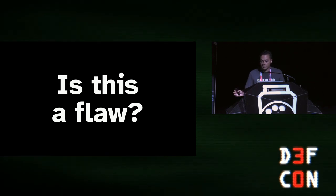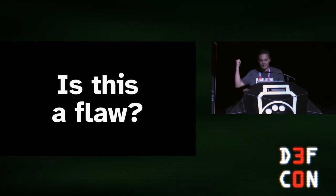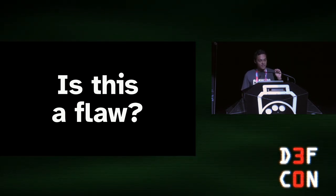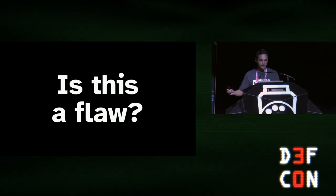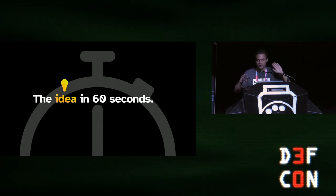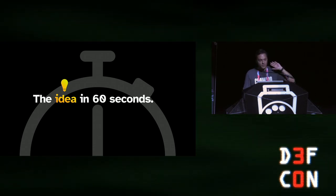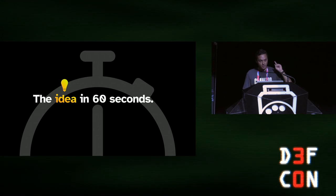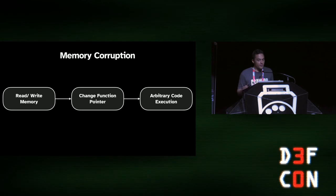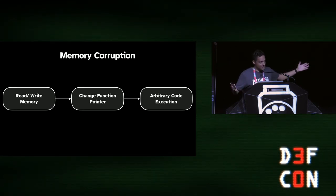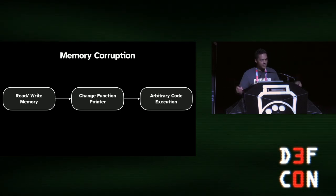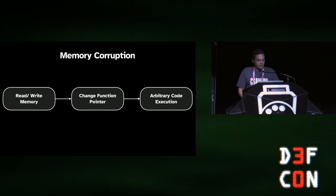By the end of today's talk, I'd like you to come up with an answer to this question: is this a flaw, or is PAC-MAN a consequence of multiple things coming together? Instead of boring you with all the details, I'm going to give you the entire idea in 60 seconds. A lot of memory corruption attacks follow the same pattern: you get the ability to read and write memory you shouldn't, you change a function pointer — a return pointer, vtable entry, something like that — and now you've got arbitrary code execution.